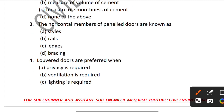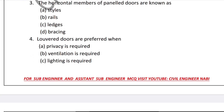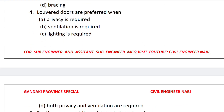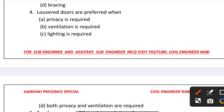Question 4: Louver board doors are preferred when? Options are: when privacy is required, when ventilation is required, when lighting is required, or when both privacy and ventilation are required. The correct answer is that both privacy and ventilation are required.